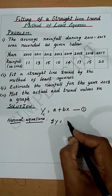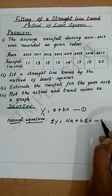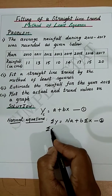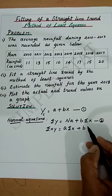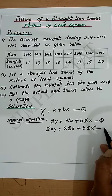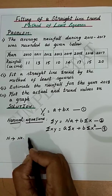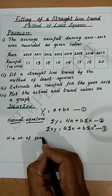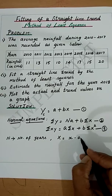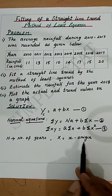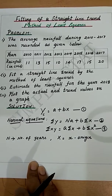The normal equations are: summation Y = na + b(summation X), and summation XY = a(summation X) + b(summation X²). Here n denotes the number of years, and X = x minus the origin.